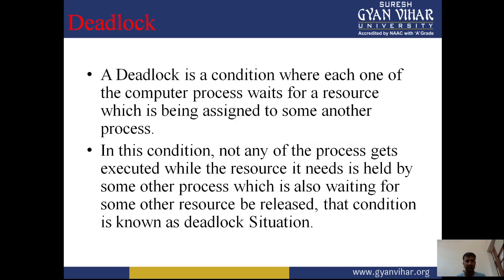Process two is waiting for resource one. Every process needs some resource to complete its execution. The operating system grants a resource if it is available; otherwise, the process waits. Deadlock is a situation where each computer process waits for a resource being assigned to another process, and none of the processes get executed since the resource needed is held by another waiting process.